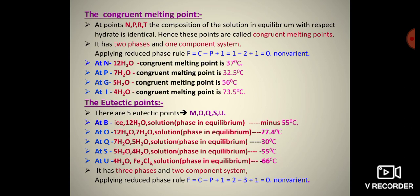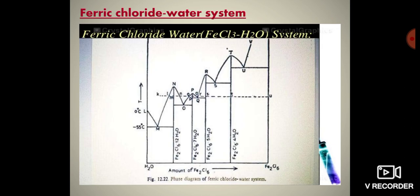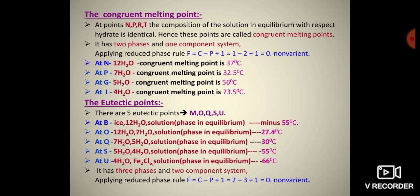At N, 12H₂O has a congruent melting point of 37°C. At P, 7H₂O has a congruent melting point of 32.5°C. At Q (labeled G), 5H₂O has a congruent melting point of 56°C. At T (labeled I), 4H₂O has a congruent melting point of 73.5°C.